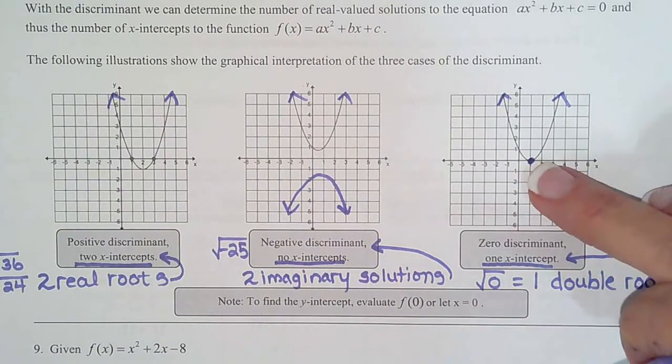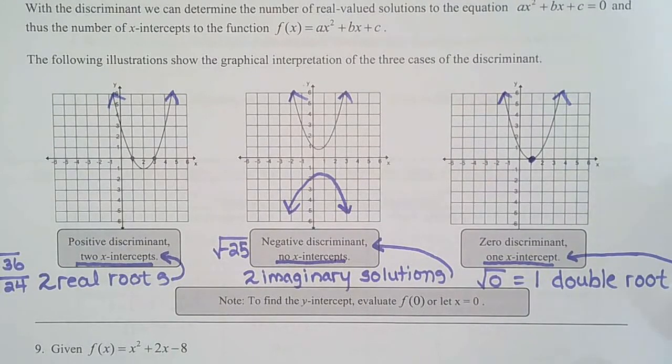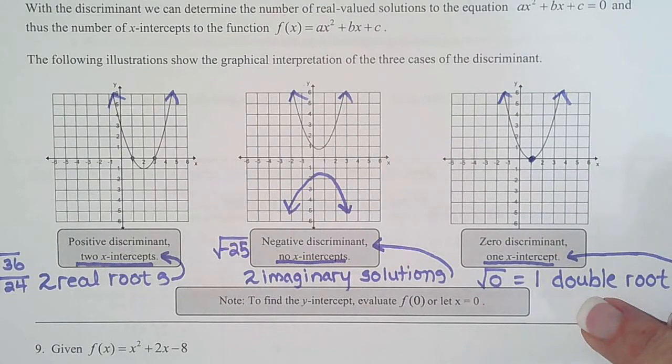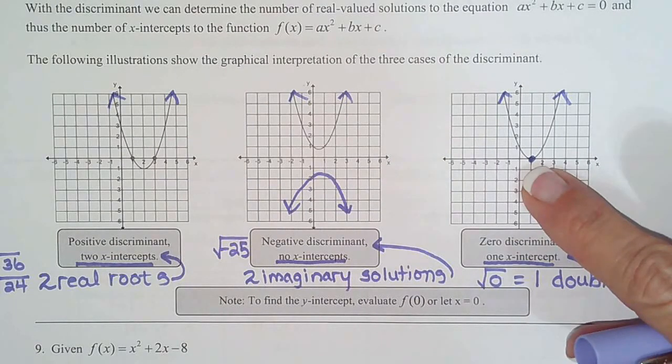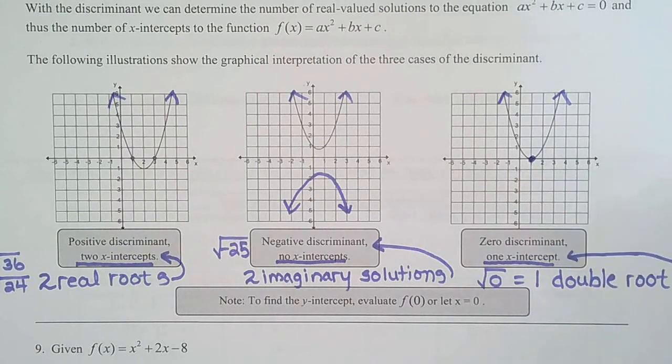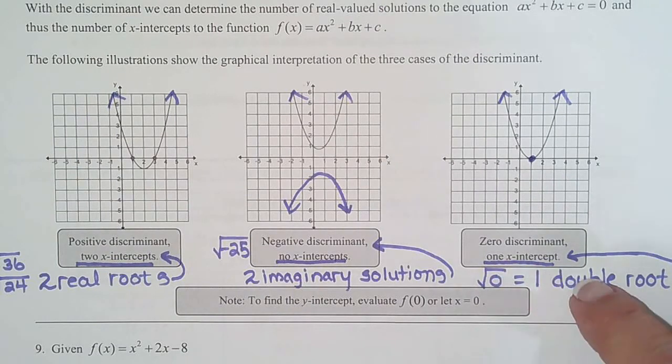But one double root means you got the same answer twice, x equals three and x equals three. Or in this case, x equals one and x equals one. Anytime you get the same number twice, that means it only has one x-intercept because it's the same number. So a double root translates to one x-intercept.